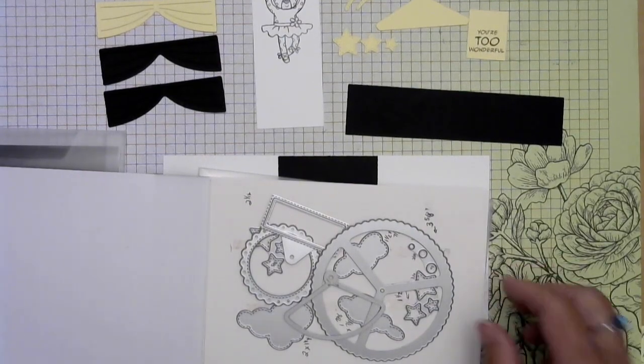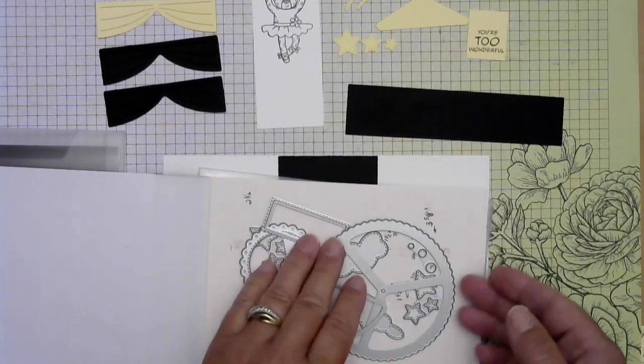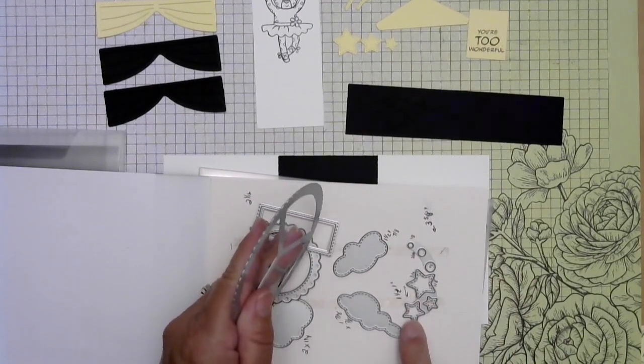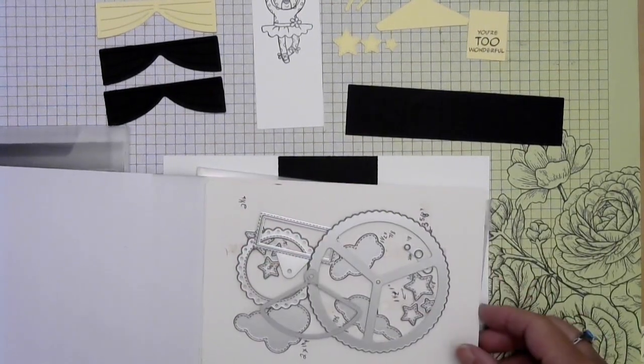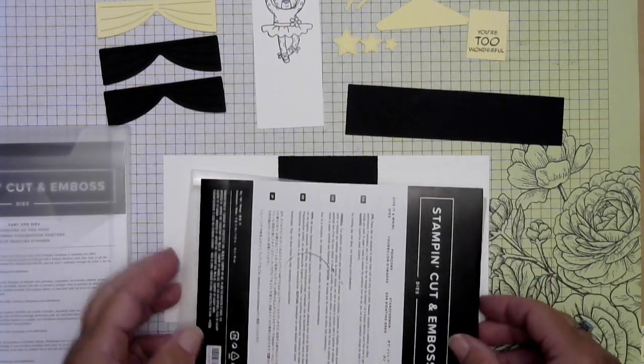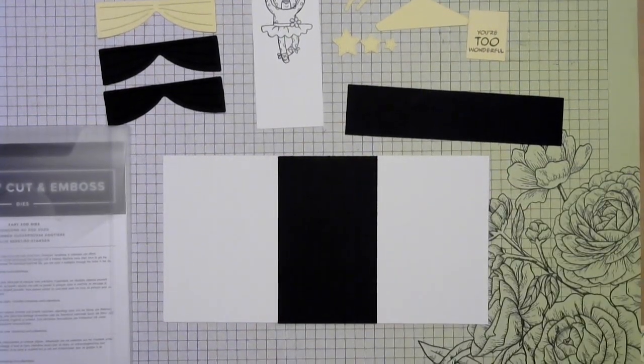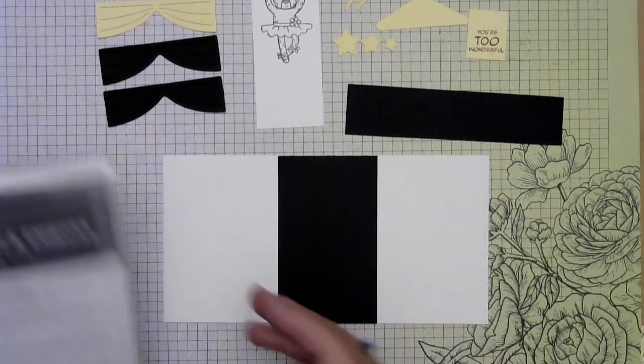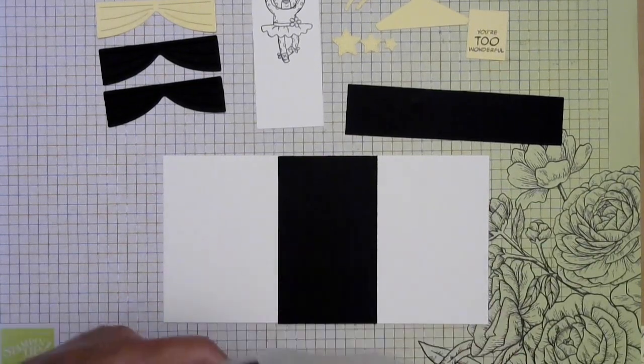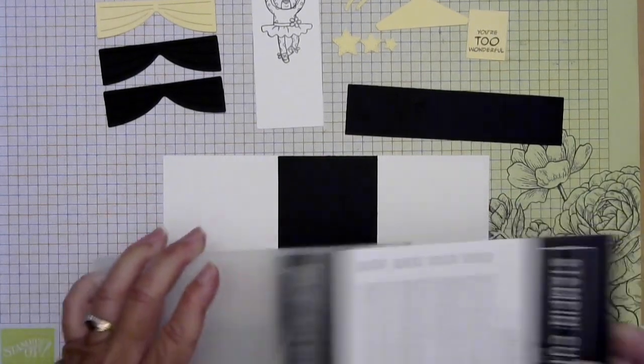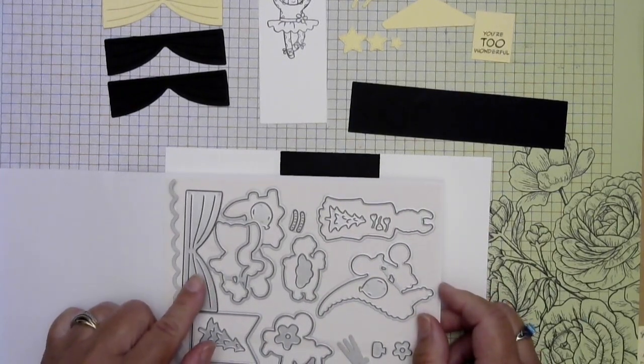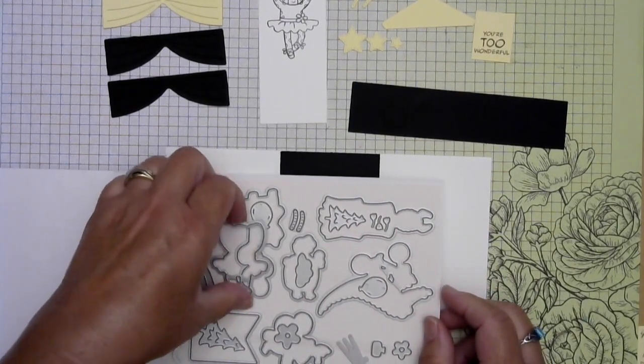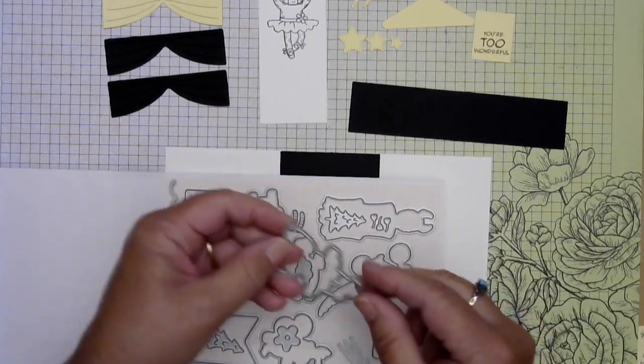So that is that piece and then I'm also using the stars out of here so this is where I'm getting my stars from. Put those off to the side and then of course we're using the zany zoo dies we're going to be using the curtain and the leopard.